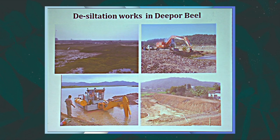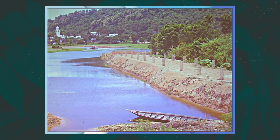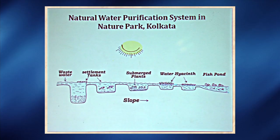As a solution, desiltation can be carried out. Some pictures show desiltation work in Deepor Beel, where sediments have been removed and dumped in surrounding areas; roads and embankments have been constructed, and plantation has been made. Thereby, erosion can be stopped and water depth can be maintained. That way, some of the wetlands can be easily developed in the state.